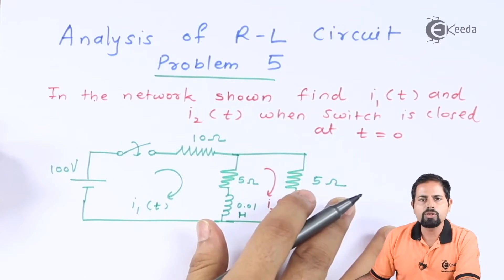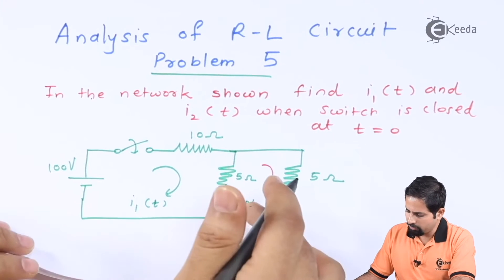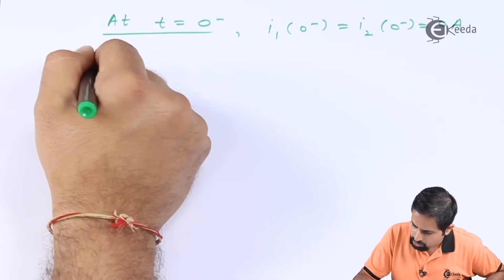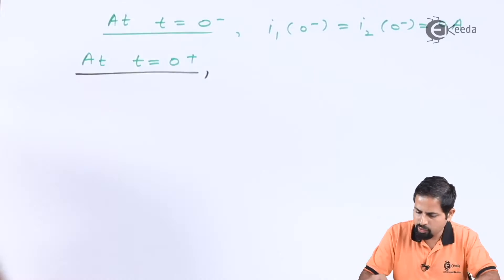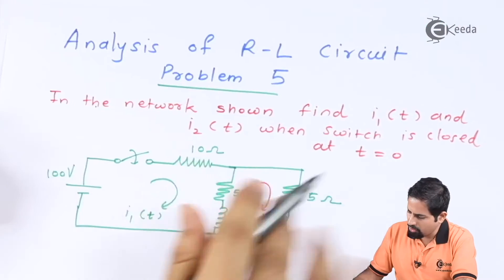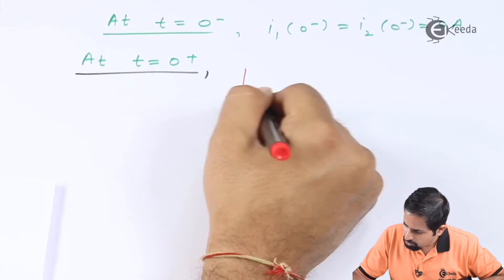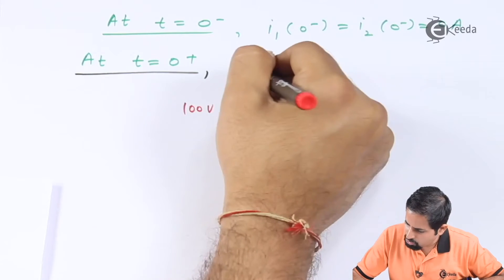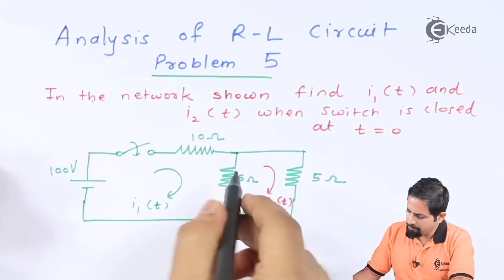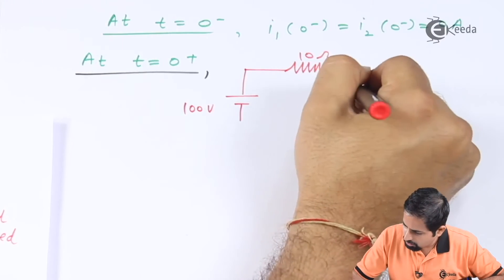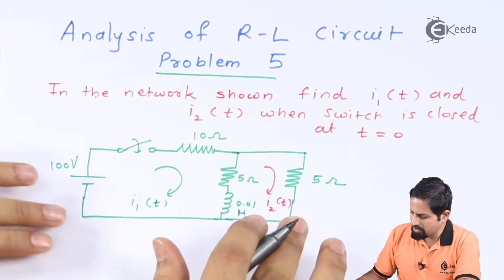At time t=0 plus, this switch will get closed. The inductor will act as an open circuit. Drawing the circuit at t=0 plus, we have a 100 volt source with a 10 ohm resistor, then a 5 ohm resistor, and the inductor acting as an open circuit.